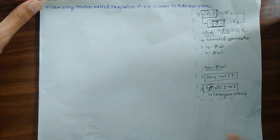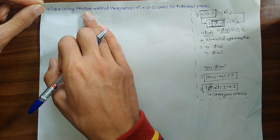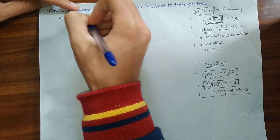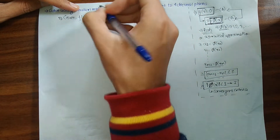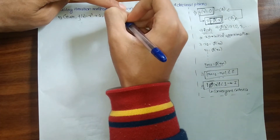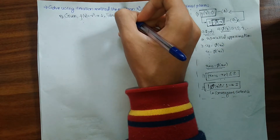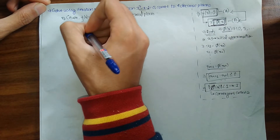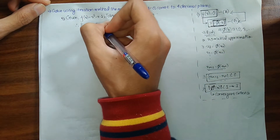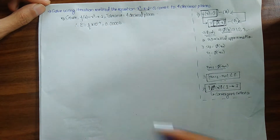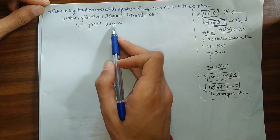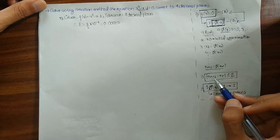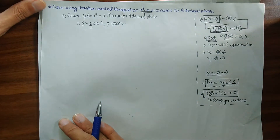Now let me solve the equation. Given: f(x) = x³ - x - 1. Our tolerance is 4 decimal places, so the error e = (1/2) × 10⁻⁴ = 0.00005. We will run our iteration until |x_{n+1} - xₙ| ≤ 0.00005.